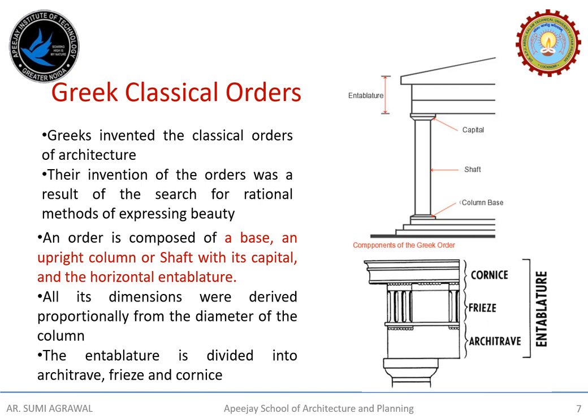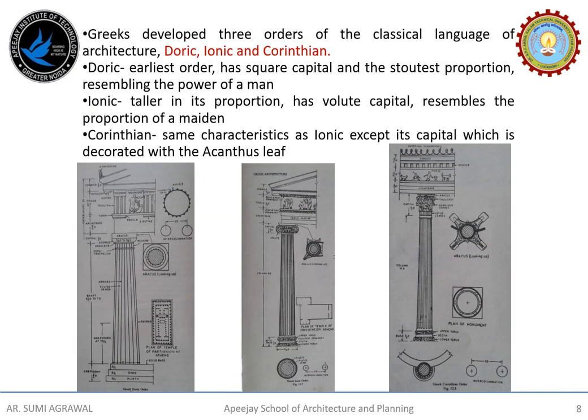The entablature, which is the horizontal part above the capital, is further divided into the architrave, frieze and cornice. The arrangement of the entablature and proportions of its different parts are derived from the diameter of the column base. Greeks were credited with originating the three orders of the classical language of architecture: the Doric order, the Ionic order and the Corinthian order. Columns were understood by the Greeks to be anthropomorphic, or representative of the human body — the base suggests the feet, the shaft the torso, and the capital the head.